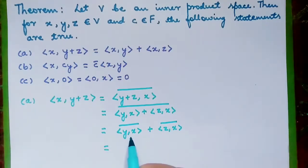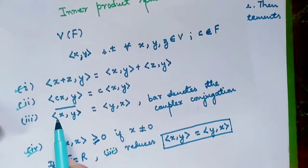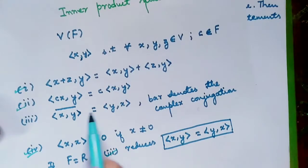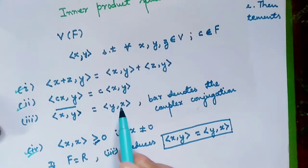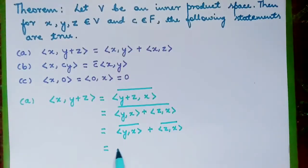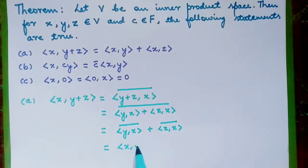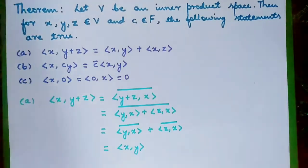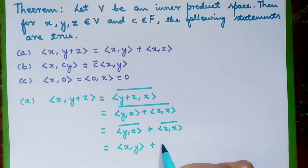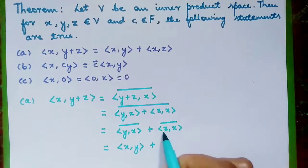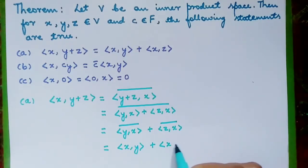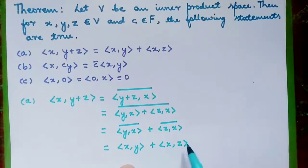The complex conjugation of ⟨x,y⟩ is exactly equal to ⟨y,x⟩, so this can be written as ⟨x,y⟩ by applying the third condition. In a similar way, ⟨x,z⟩ follows the same logic, so the first part is proved.